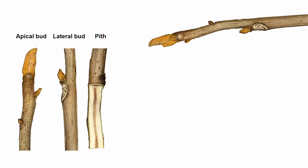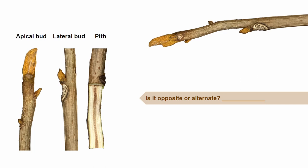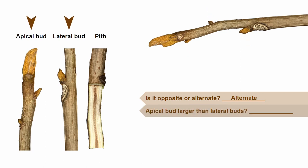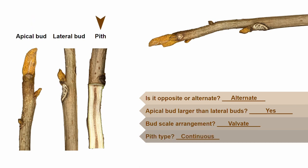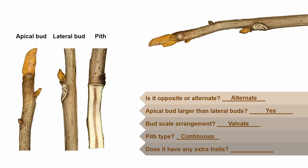Now that we've learned some of the basics of twig identification, let's recap with a few examples. Here is an unknown twig. The first thing we should do is see whether or not it is opposite or alternate — this twig is alternate. Now we'll focus on the apical and lateral buds; the apical bud is a larger version of the lateral bud. Looking at the apical bud, the buds are valvate because there are only two bud scales that meet in the middle. The pith appears to be brown and continuous. One trait that is glaring is this twig's flat, bright yellow buds — that immediately tells me this twig belongs to none other than bitternut hickory.